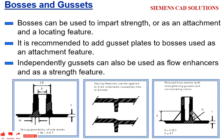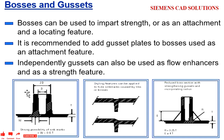Here we have the design guidelines for creating the boss. Capital D is according to your fastener size. 2D is nothing but 2 times the dimension of your fastener. For example, if you are using a 20 mm fastener, then your outer diameter should be 2 times 20, which is 40.